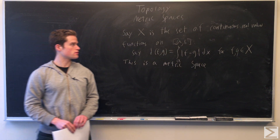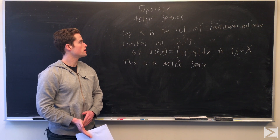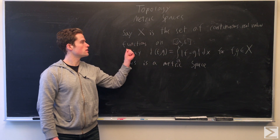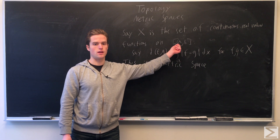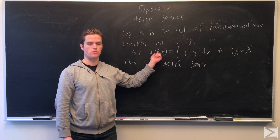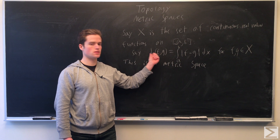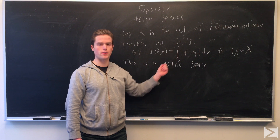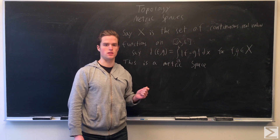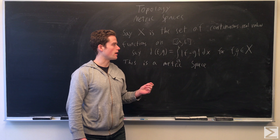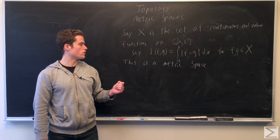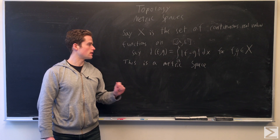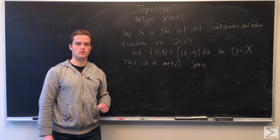One example of a metric space that maybe isn't the most usual: let X be the space of continuous functions on the closed interval [a, b]. We define our distance function for any two members f, g of this space as d(f, g) equals the integral from a to b of the absolute value of f minus g dx. We can show this is a metric space by verifying each of the axioms.